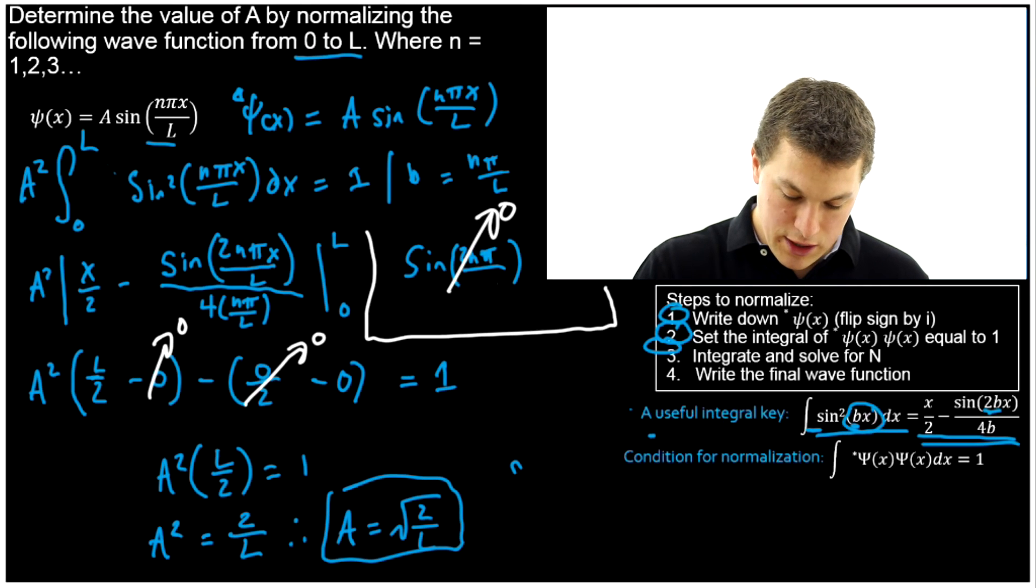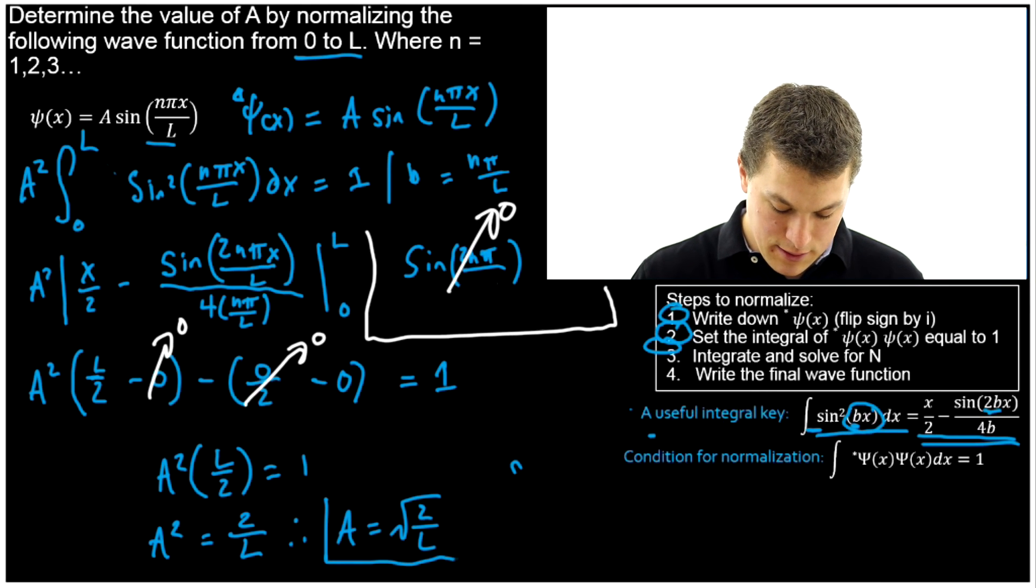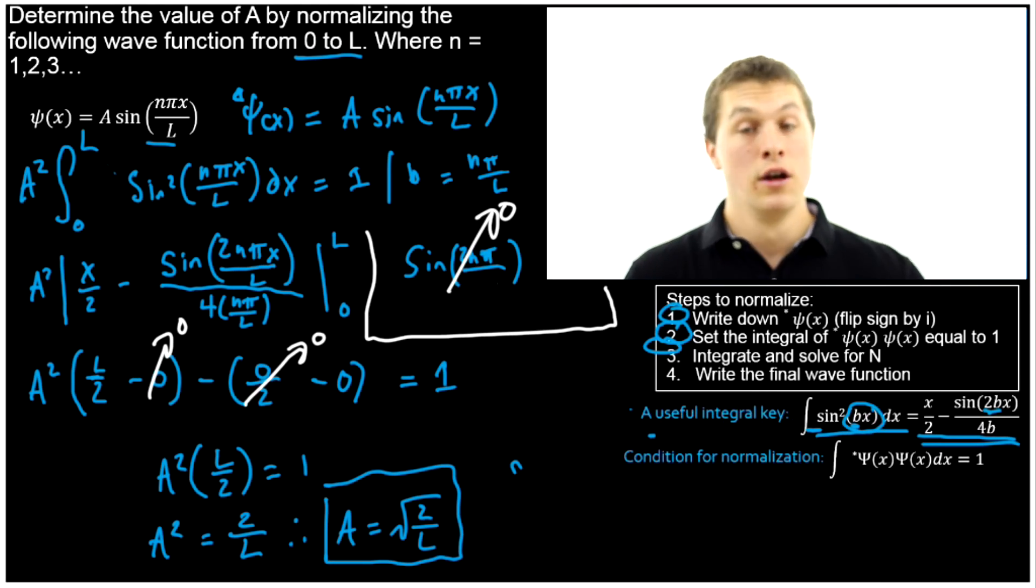Notice something cool here, we didn't assume anything about the value of n. So we just normalized not one particle in the box solution. We normalized all of them. So you never got to do it again. Awesome.